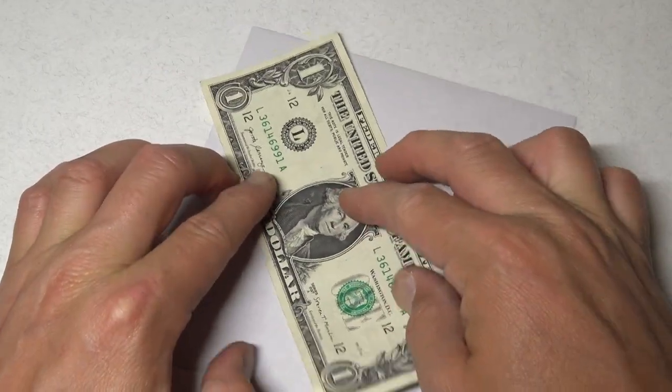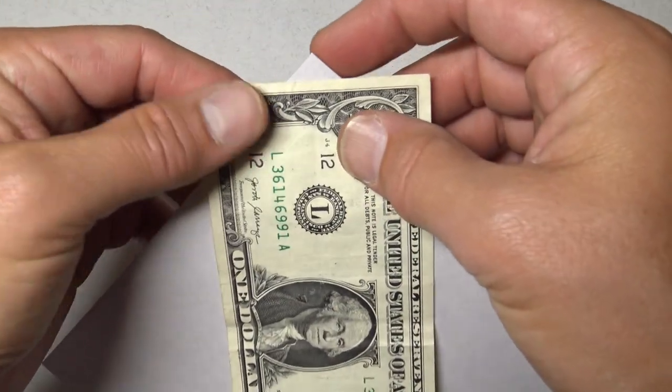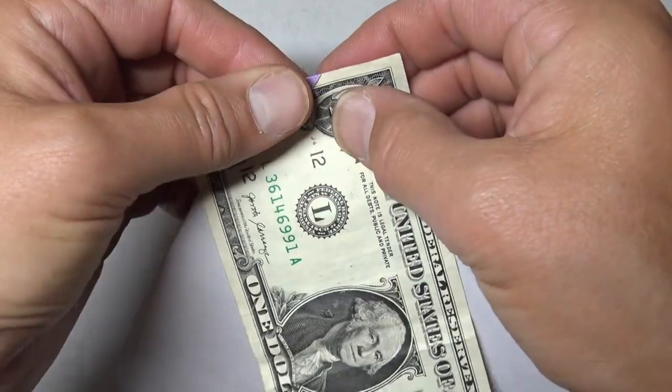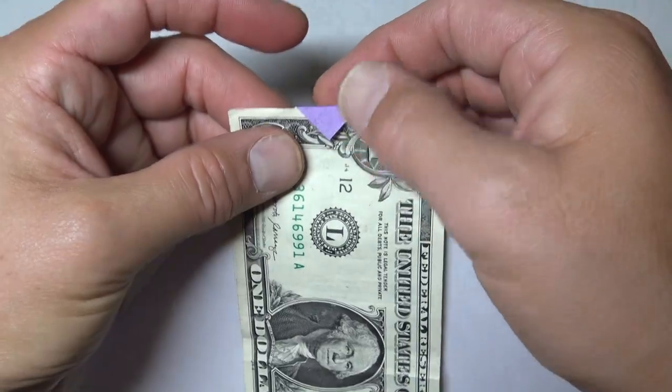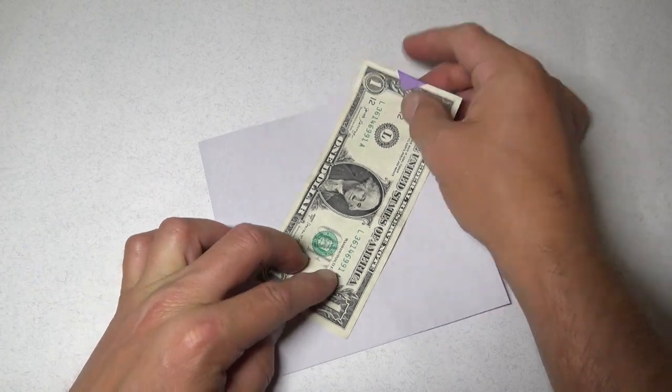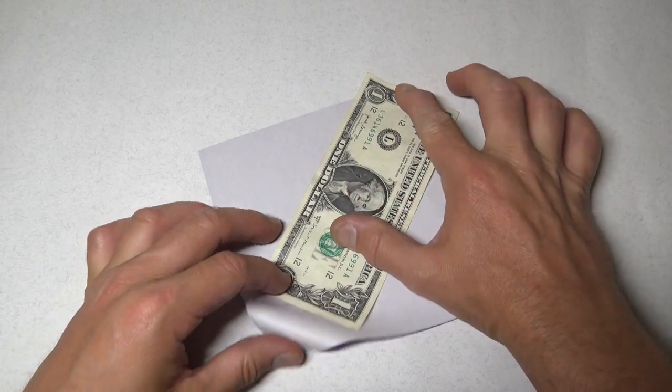So begin white side up and put the dollar on just about like this. So take one of the corners and wrap it over the edge of the dollar and try to keep it centered. So it's centered here and centered here, so it's like that.